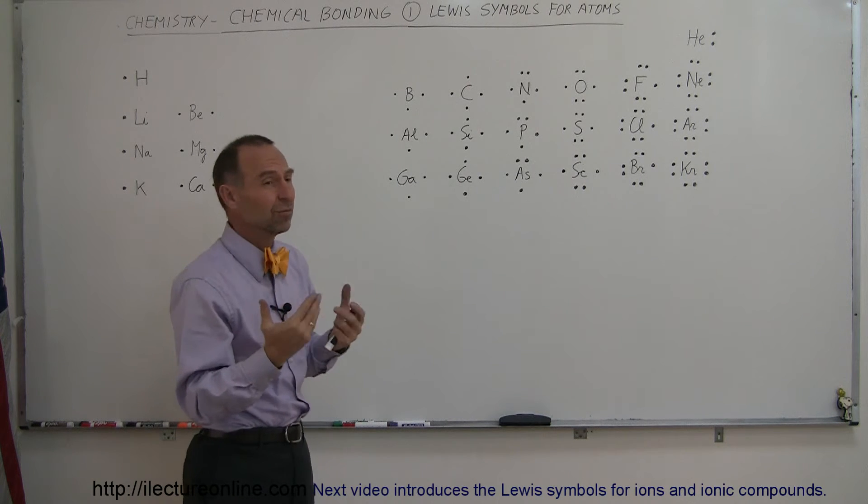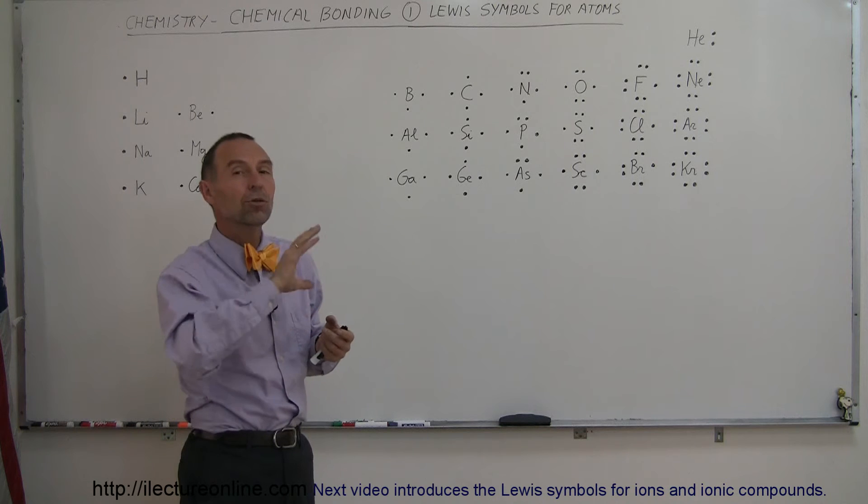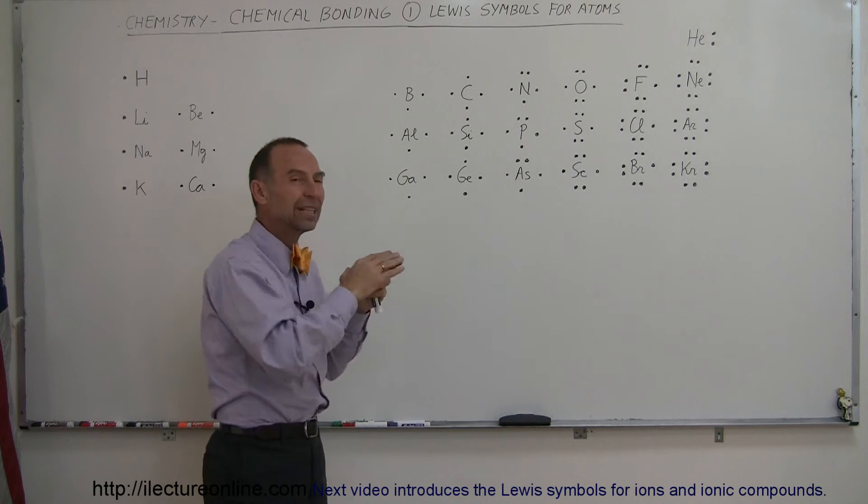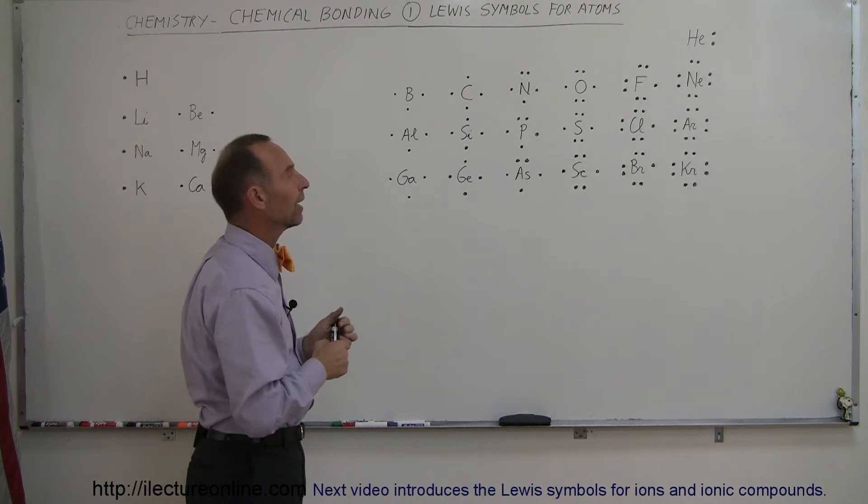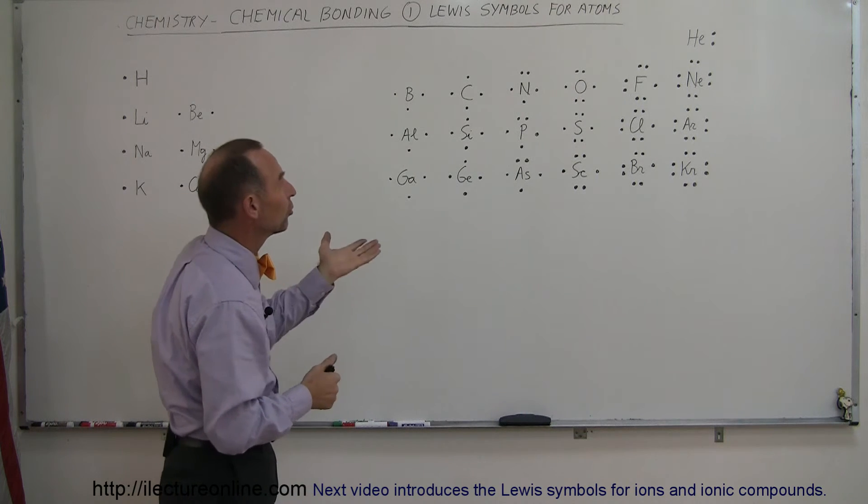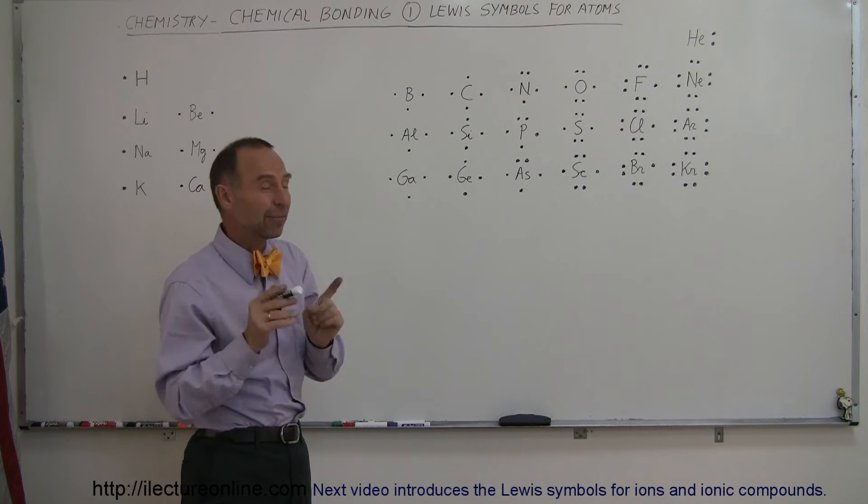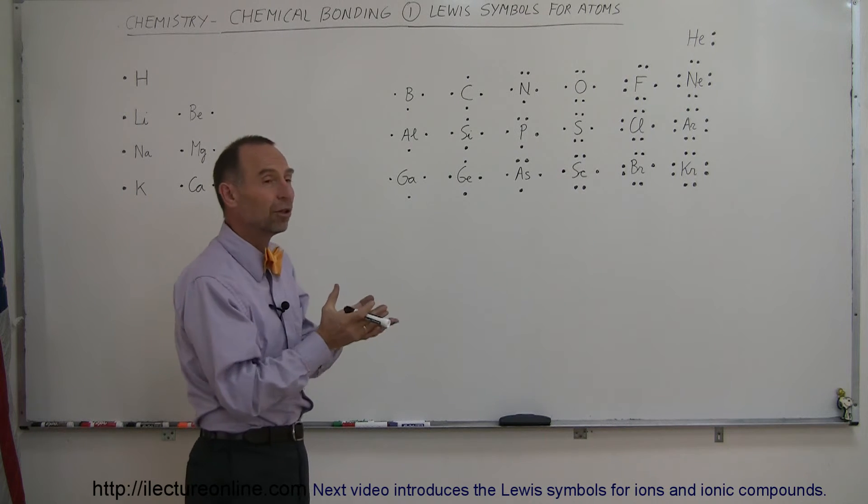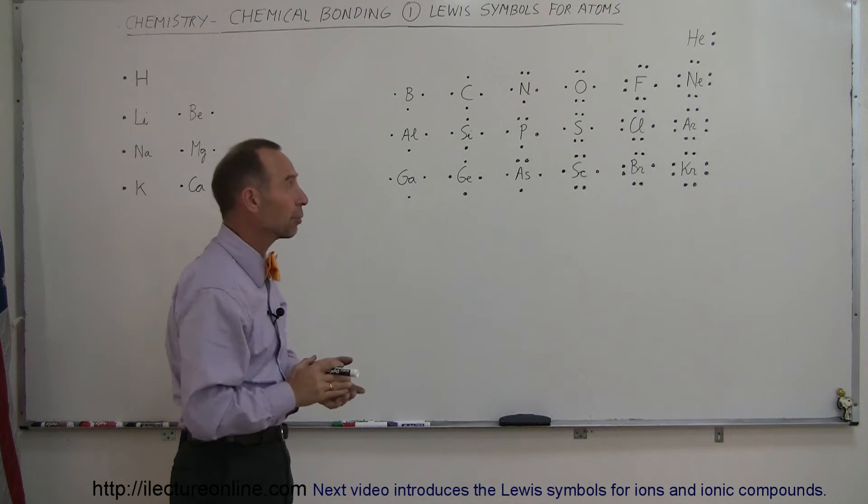And so Lewis seemed to then think that it's only important to indicate only those electrons in the outer level, in the valence band, in the valence level, and ignore the other ones. So that's what Lewis symbols do. They ignore all the other electrons except for those that are in the outermost energy level which may be involved in the bonding process.